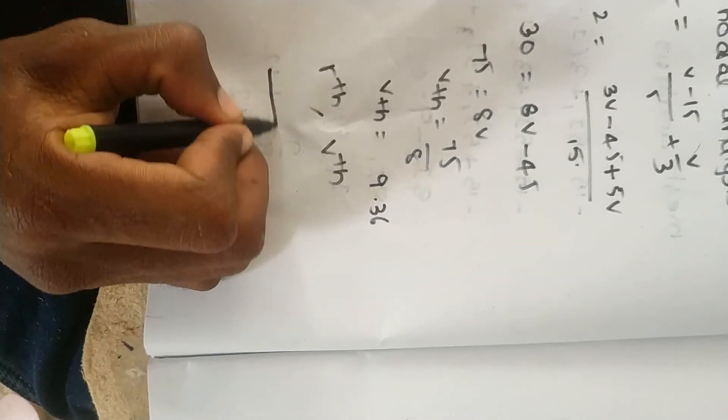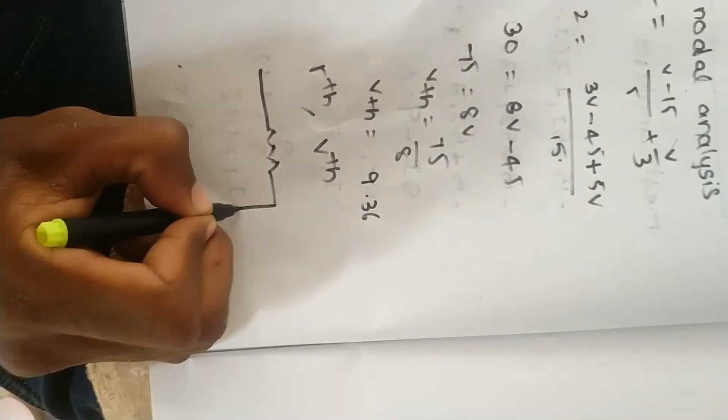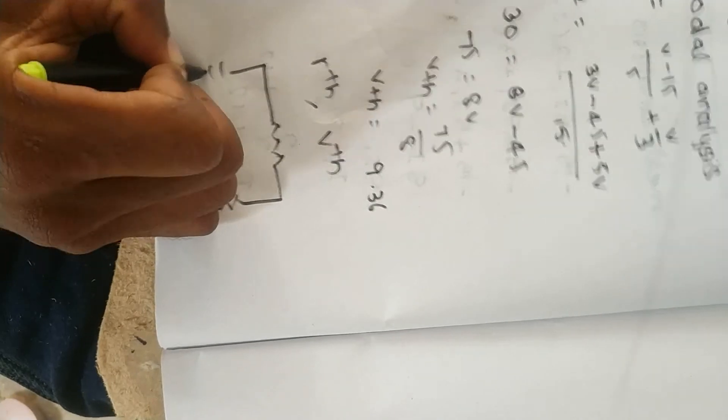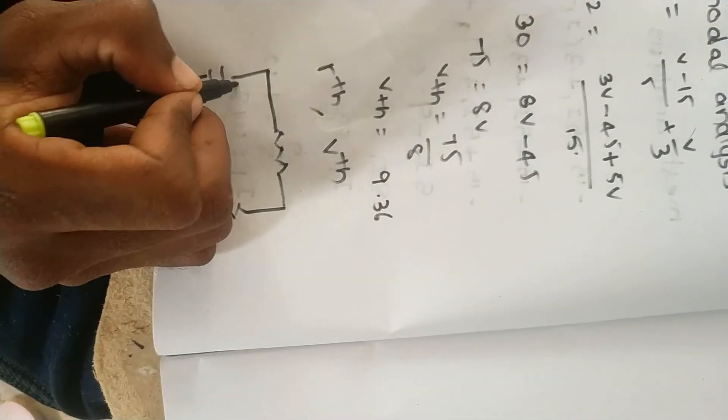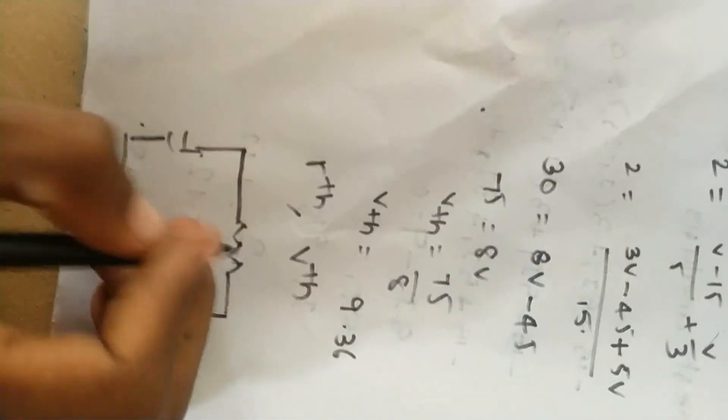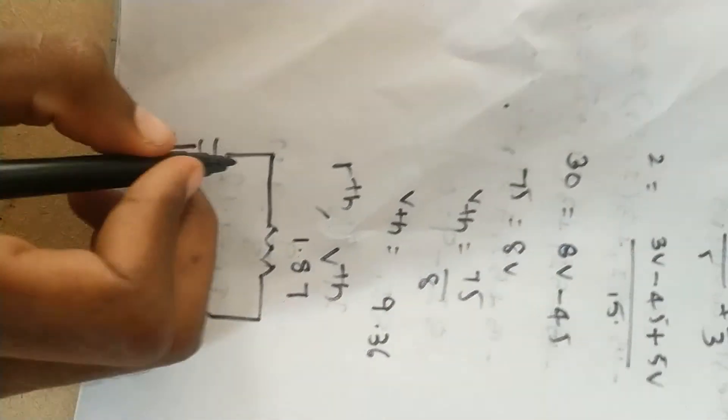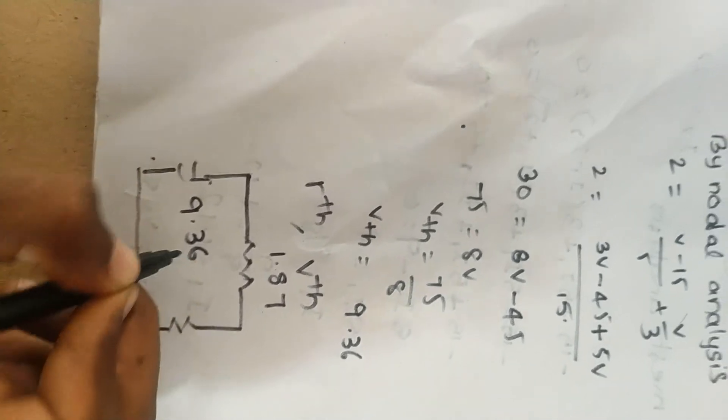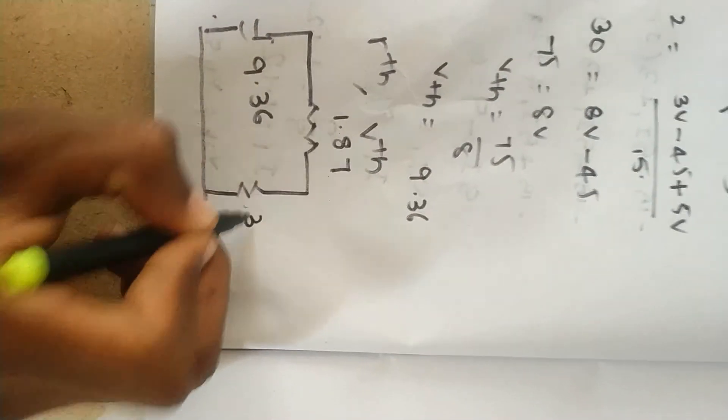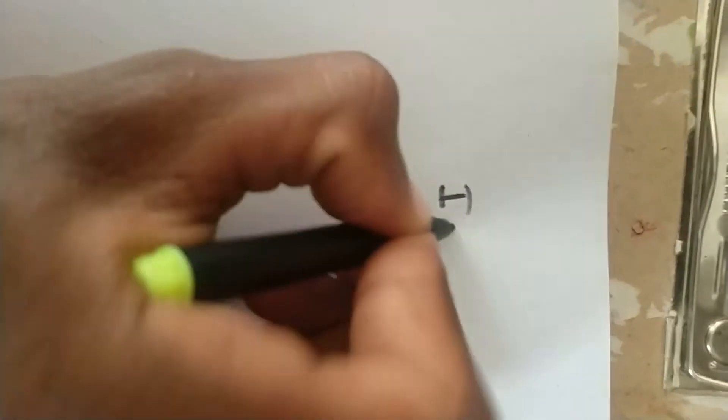Now I will draw the Thevenin equivalent circuit. V_th is 9.36 volts, R_th is 1.87 ohms, and the load resistance R_L is 3 ohms.